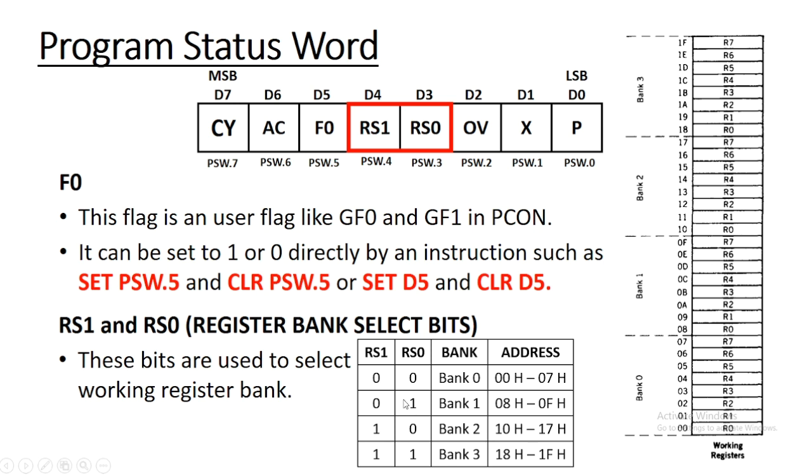For 1, 0, bank 2 will be selected. And for 1, 1, bank 3 will be selected. The use of these two bits is to select any one bank out of 4 available banks.